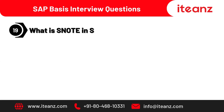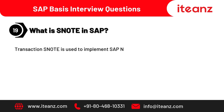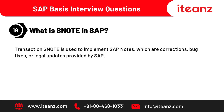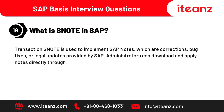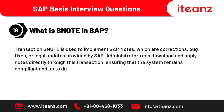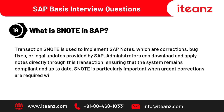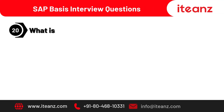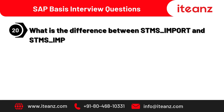What is S-Note in SAP? Transaction S-Note is used to implement SAP notes, which are corrections, bug fixes, or legal updates provided by SAP. Administrators can download and apply notes directly through this transaction, ensuring that the system remains compliant and up-to-date. S-Note is particularly important when urgent corrections are required without waiting for a full support package implementation.